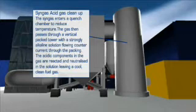The syngas then passes through a vertical packed tower that has a strongly alkaline solution. The acidic components react and are neutralized in the solution, leaving a cooled, clean fuel gas suitable for use in a gas engine.